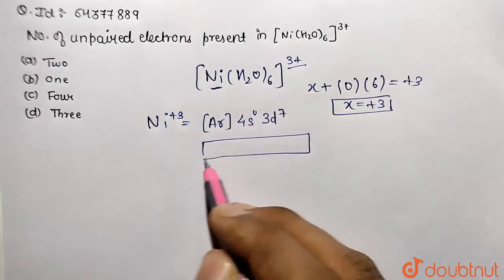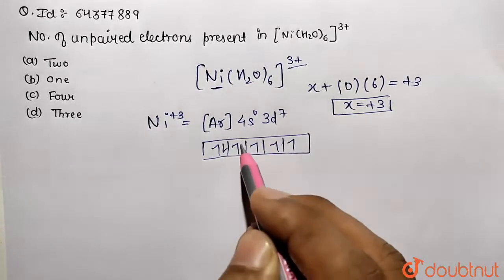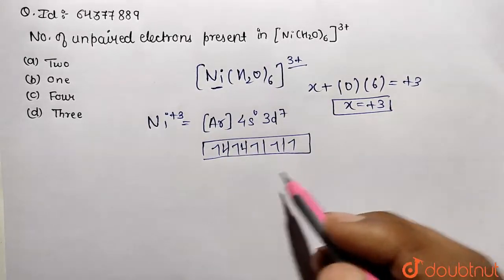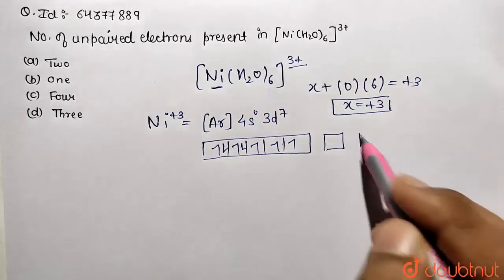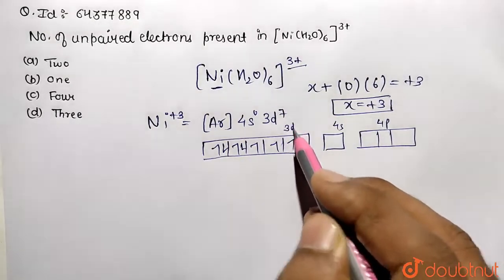So if I represent 3d⁷: 1, 2, 3, 4, 5, 6 and 7. So this is the 7. Here 4s is already vacant, 4p is already vacant which are represented over here. This is the 3d only.